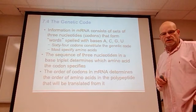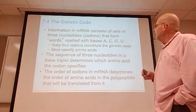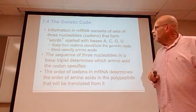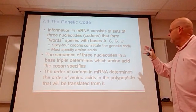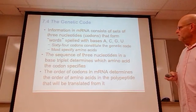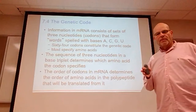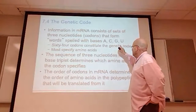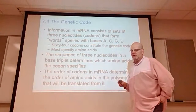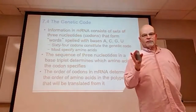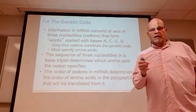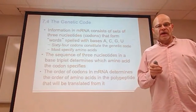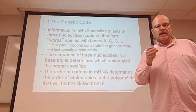The genetic code information in messenger RNA consists of sets of three nucleotides called codons, which form words spelled with bases A, C, G, and U. There are 64 possible combinations of A, C, G, and U taken three at a time.